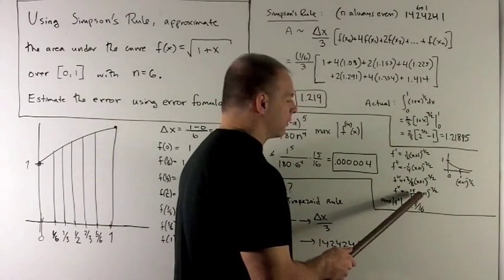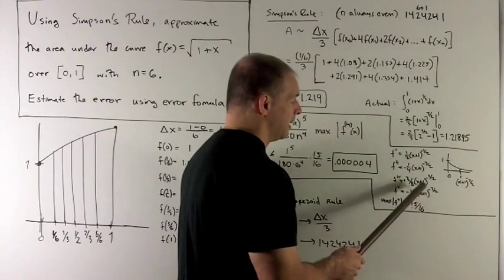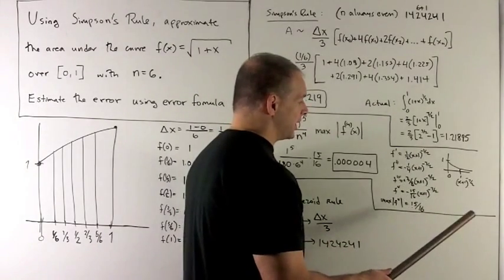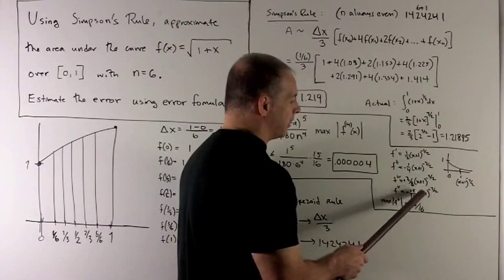We have a couple ways we could go from here. We could take the derivative again, and we would see that it's decreasing, but it's also easy enough just to think about it.